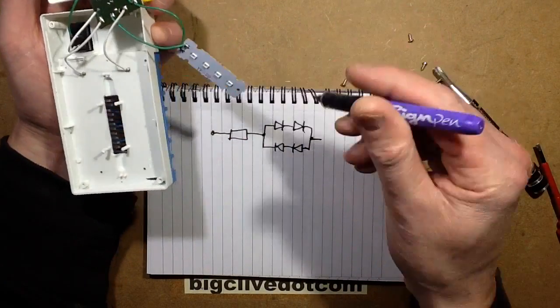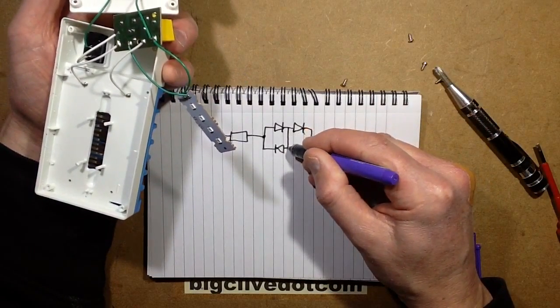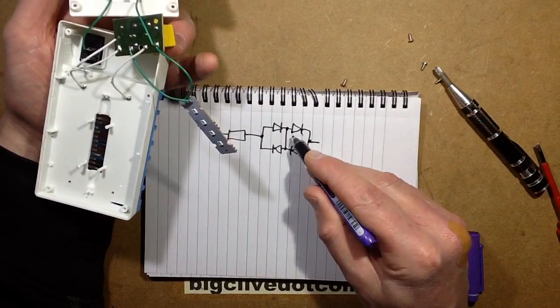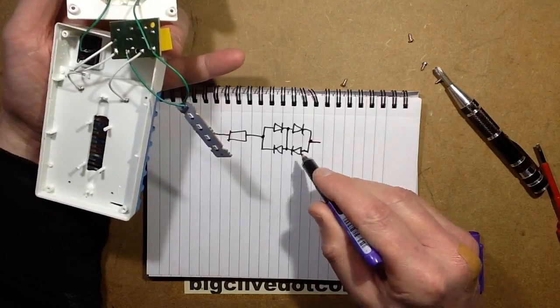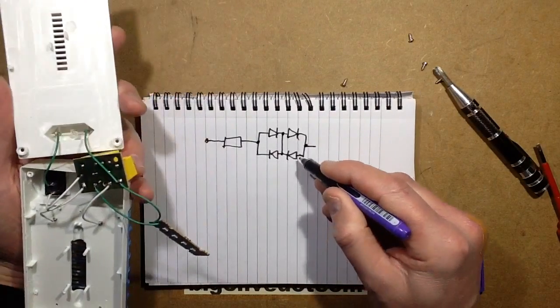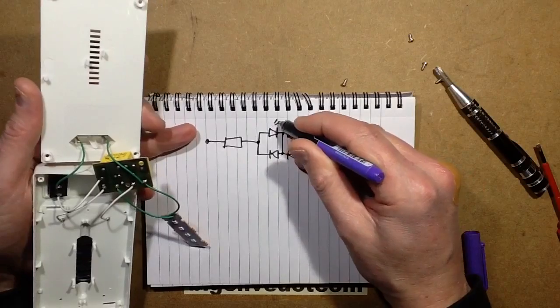No, it doesn't. They had it tied across like that so the voltage, the reverse voltage was always capped to exactly 3 volts across each LED by the other LED in the opposite direction.